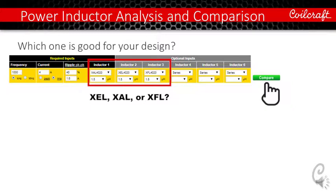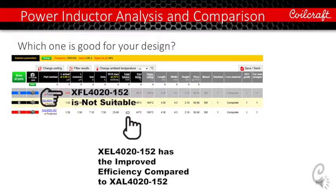So if we hit the compare button, on this page you can compare the three selected part numbers side-by-side. For a typical 40% ripple current in this operating condition, XFL4020-152 was grayed out because this part is saturated at this required peak current, which is 4.8 amps. XEL4020 has improved efficiency compared to XAL4020. So you can see XEL4020-152 has much lower total loss compared to XAL4020.